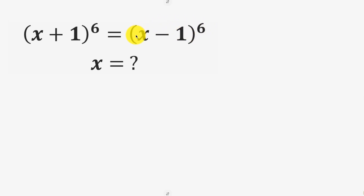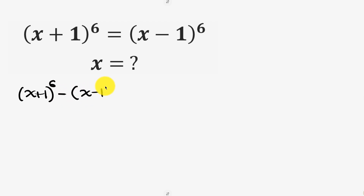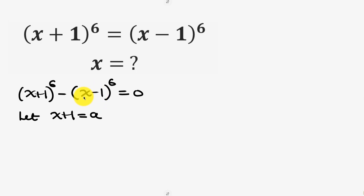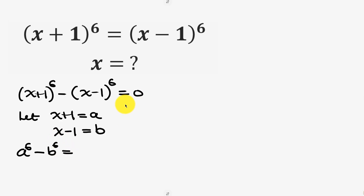Our first step will be to move what we have on the right hand side to the left hand side, so that we have (x+1) raised to power 6. As this crosses to the left it becomes minus (x-1) all raised to the power of 6, and this is now equal to 0. Now we can introduce substitution by saying let x+1 be equal to a and let x-1 be equal to b. So this becomes a to the power of 6 minus b to the power of 6 equal to 0.